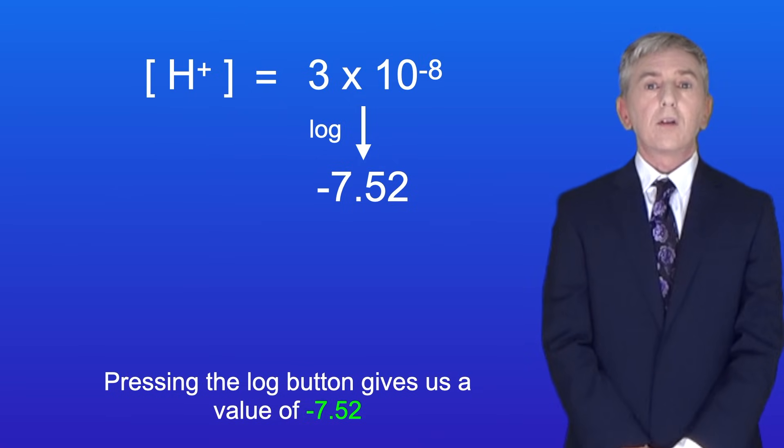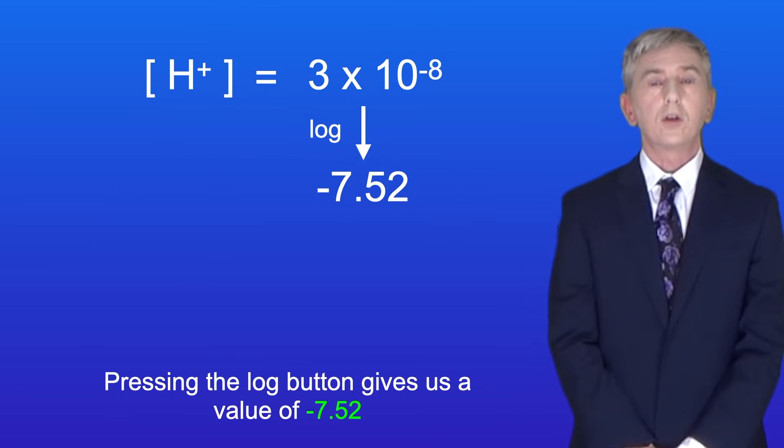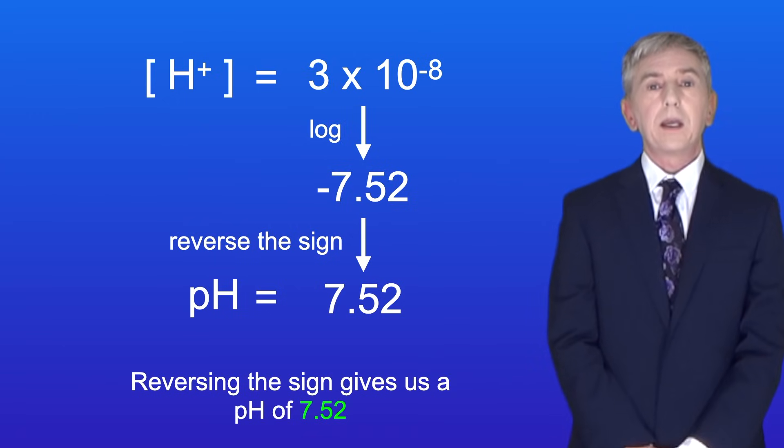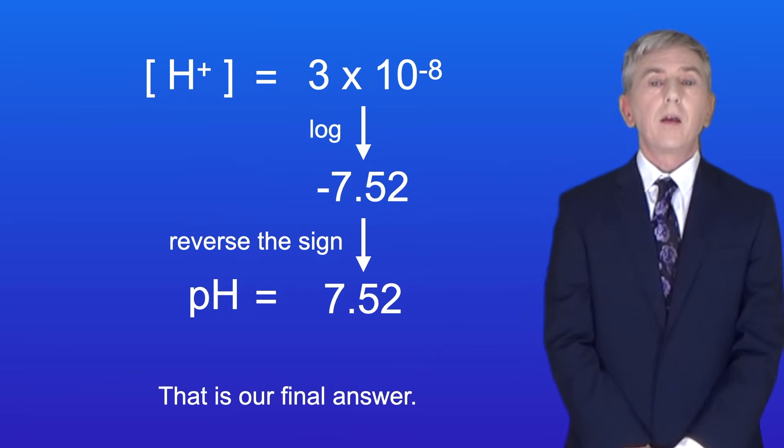Pressing the log button gives us a value of minus 7.52. Reversing the sign gives us a pH of 7.52, and that's our final answer.